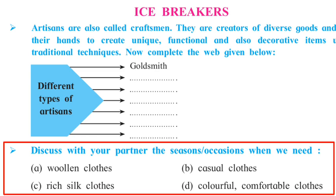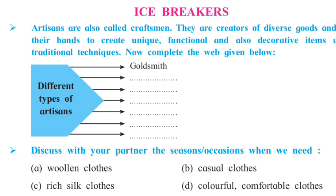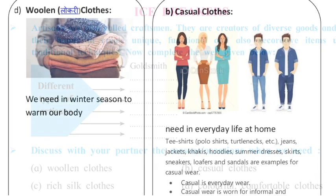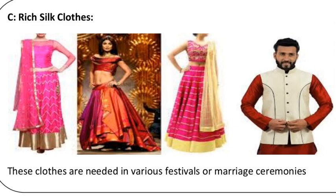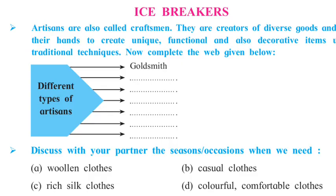We need woolen clothes in winter to keep our body warm, casual clothes in everyday life for all seasons, and rich silk clothes for various festivals and ceremonies. Likewise, think about when we need colorful comfortable clothes and write your answers in your notebook.